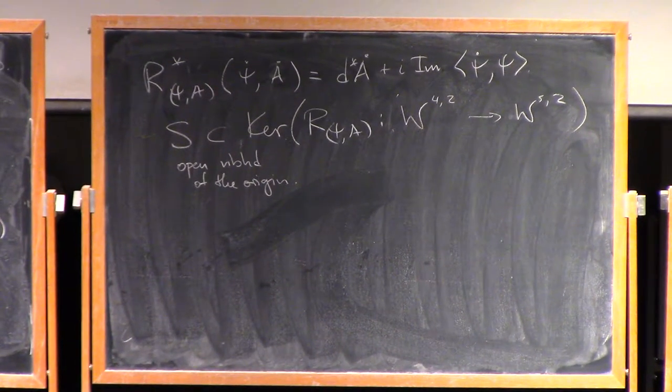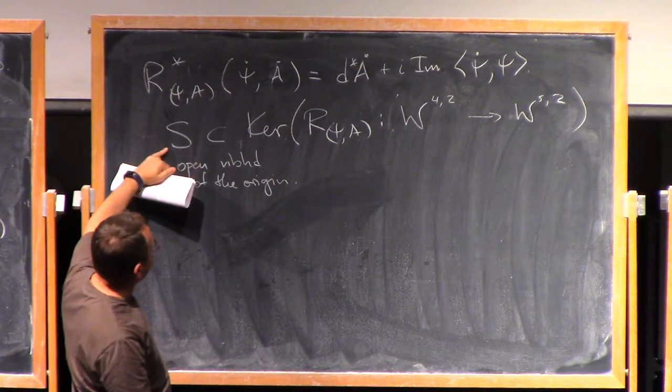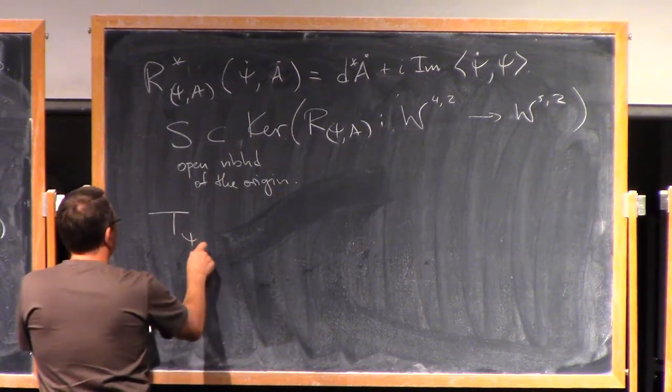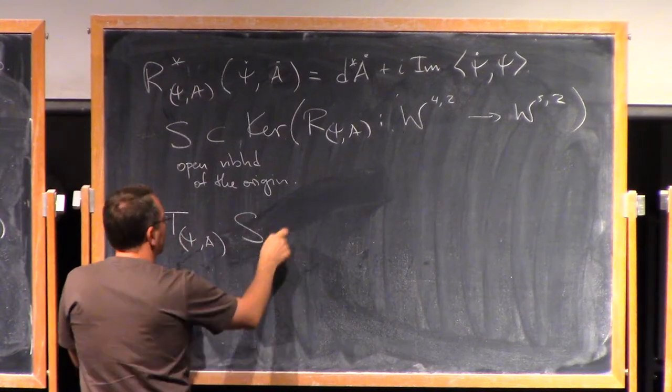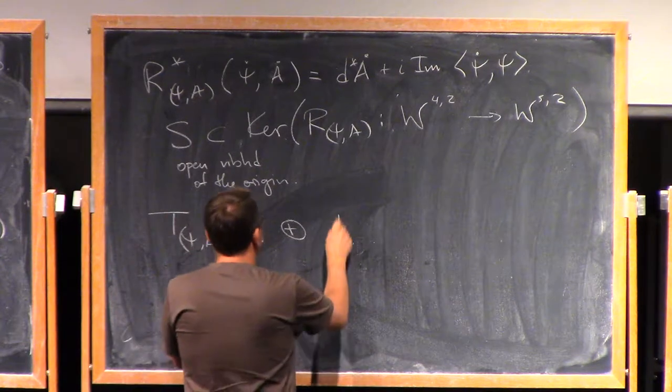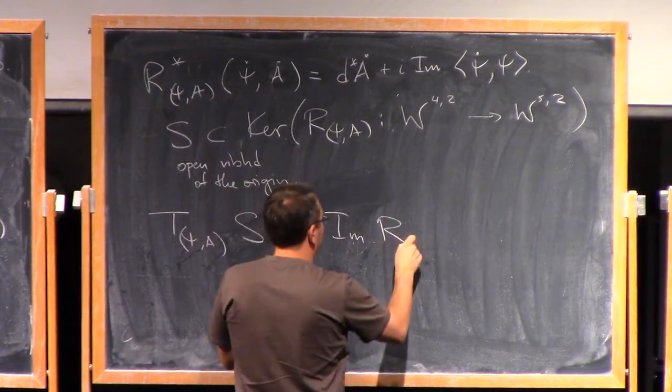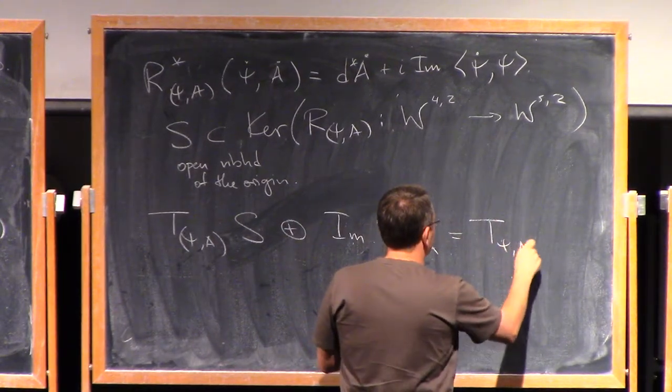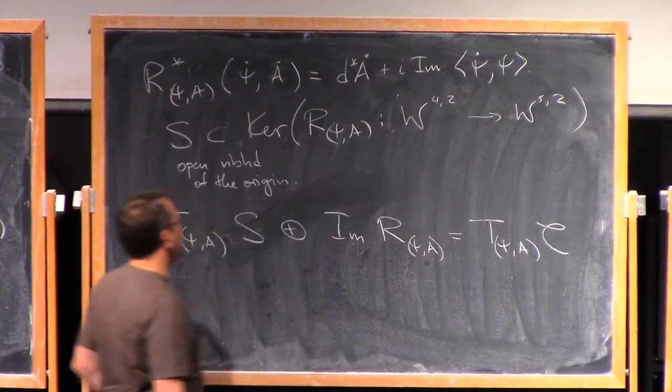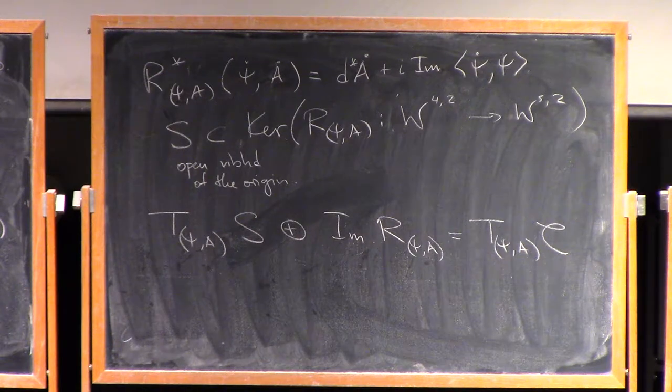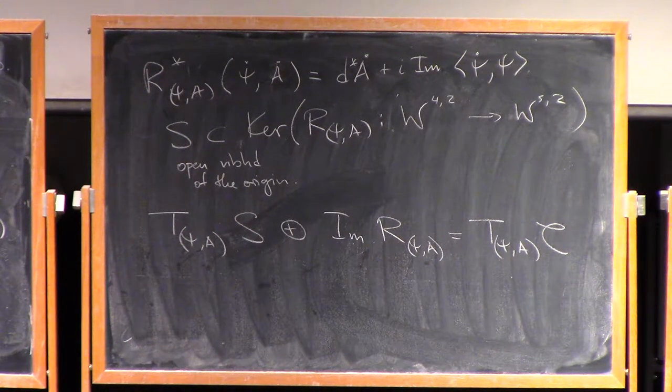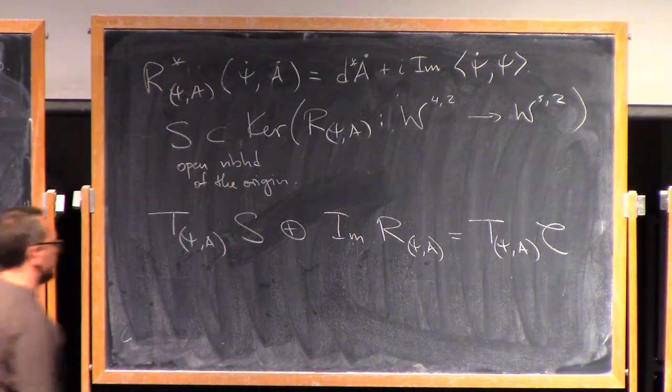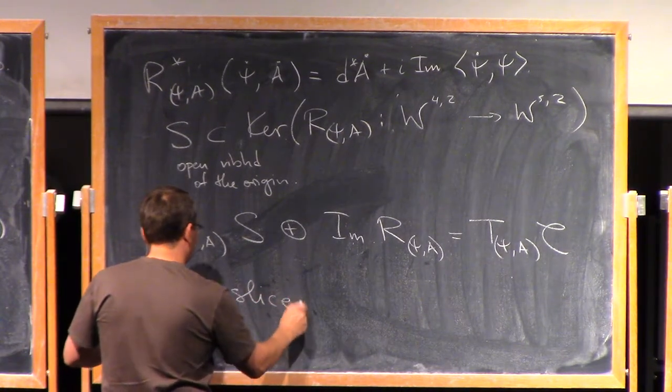We have a natural embedding of S into the configuration space, and what you can easily prove is that the tangent space at the point (ψ,A) to S plus the image of R_{ψ,A} is the whole space, that is T_{ψ,A} C. Which means, at least infinitesimally at the point (ψ,A), we have a slice, but then this also holds in a small neighborhood of the origin. So we get a slice locally.